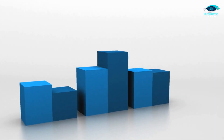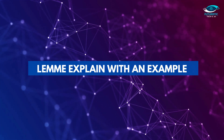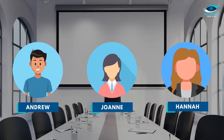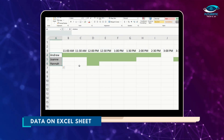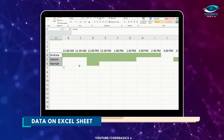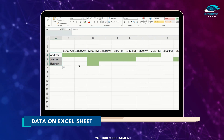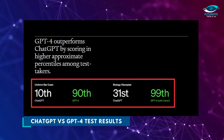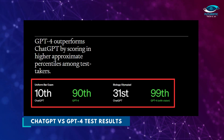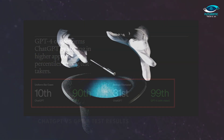GPT-4 also surpasses ChatGPT in its advanced reasoning capabilities. For example, when scheduling a meeting between Andrew, Joanne, and Hannah with different availability, we can put the scenario on an Excel sheet and highlight their free time in green to figure out that 12 PM to 12:30 PM is the common time slot. GPT-4 outperformed ChatGPT by scoring in higher approximate percentiles among test takers — reaching the 99th percentile compared to the 31st.